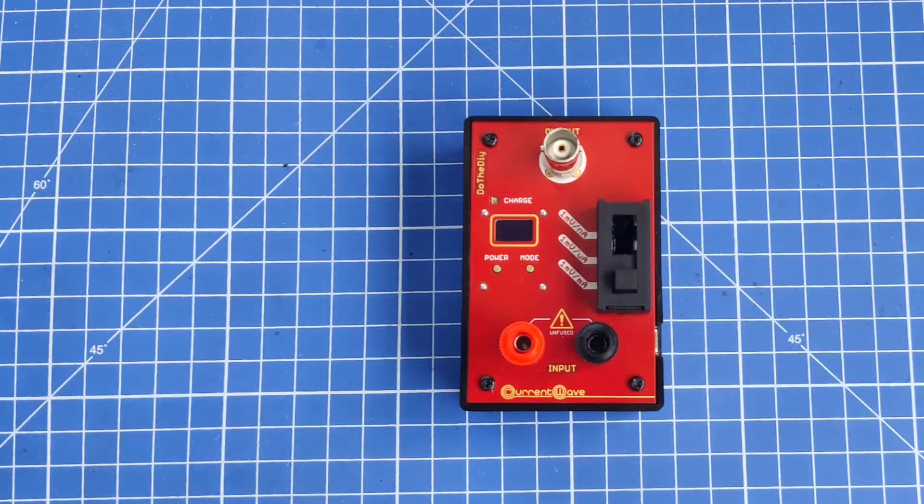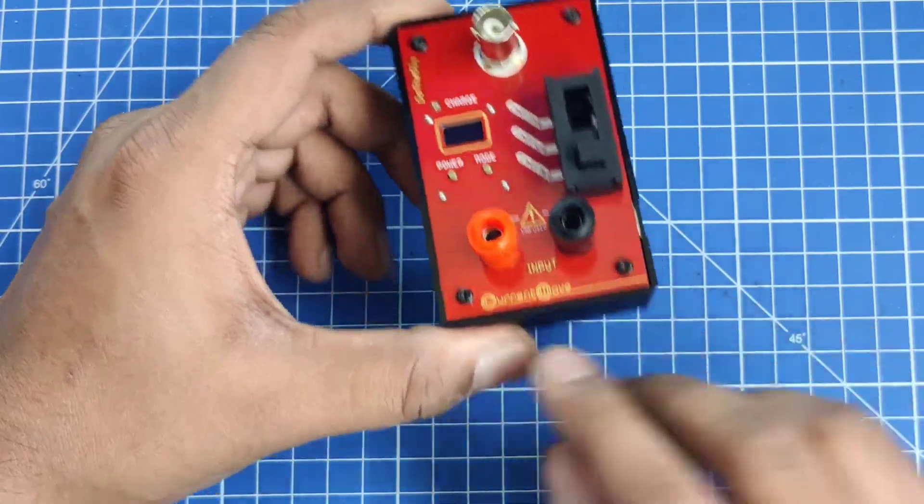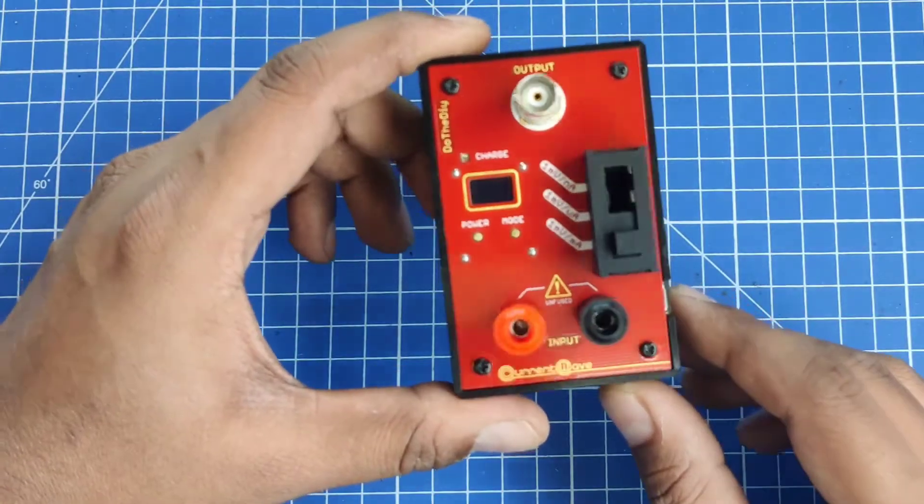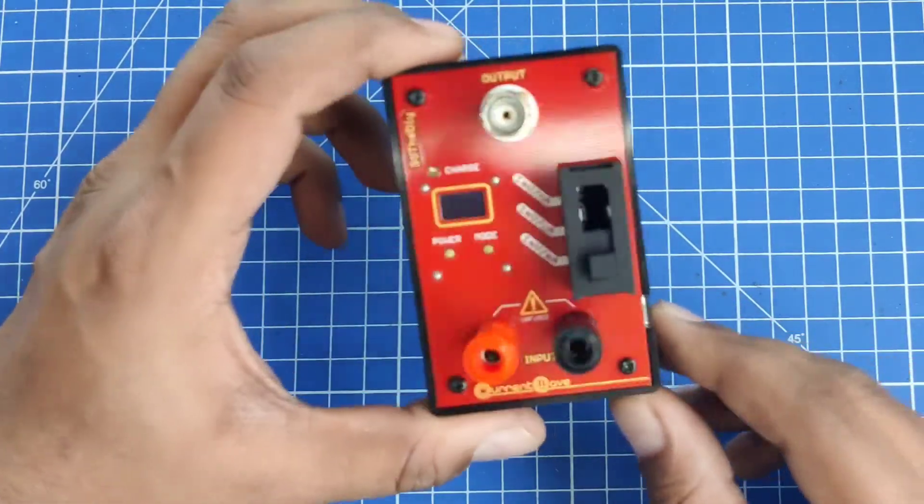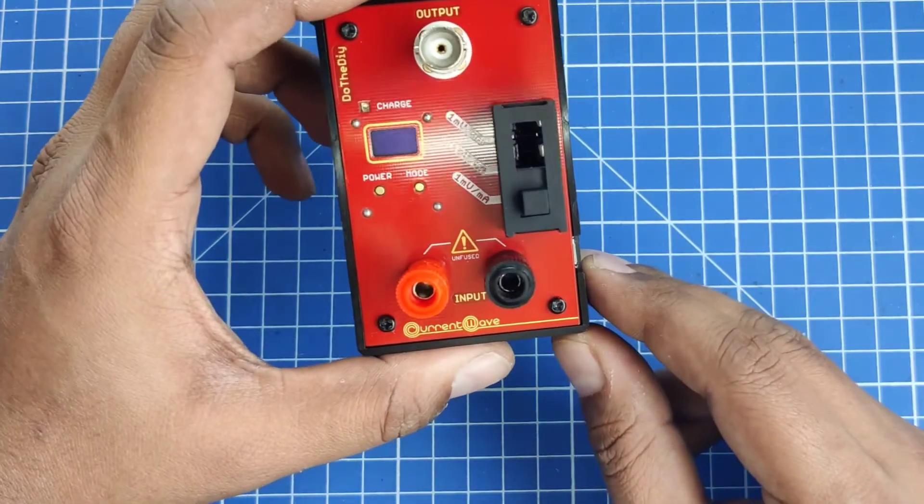Hi everyone, today I want to share the project I've been working on for quite some time. This is the Current Wave, an ultra low burden precision current measuring device. It can measure very small currents and has three ranges: milliamp, microamp, and nanoamp.